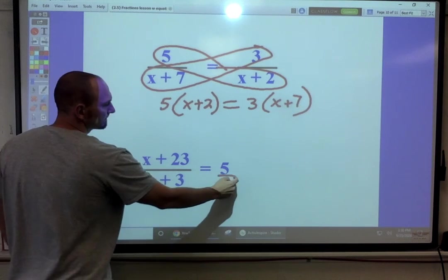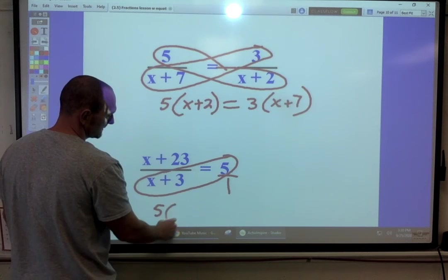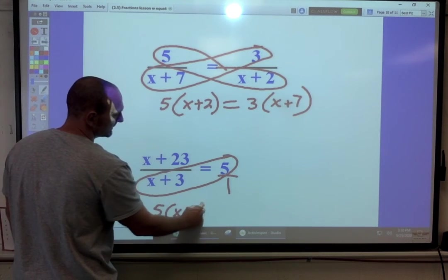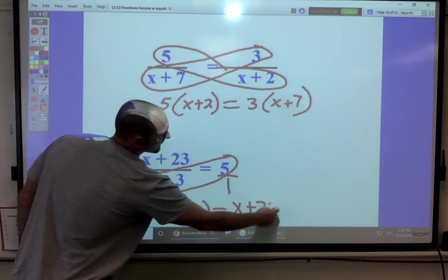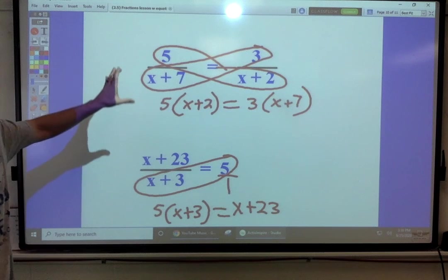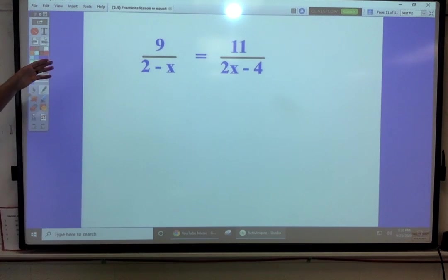Same with the bottom one. 5 times this, x plus 3, should be equal to 1 times that, x plus 23. You just change it from ratios to an equation way. We can set it up a little easier. Same thing here.